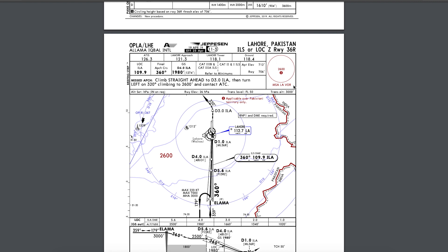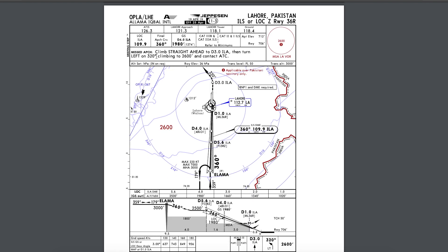This is the diagram figure showing that you will not descend below 2,600 feet unless you are established on the approach procedure. In case a pilot cannot land, there is also a missed approach procedure to follow. On a missed approach, the pilot will climb straight ahead to 3 DME, then turn left on heading 320, climb to 2,600 feet, and contact ATC.